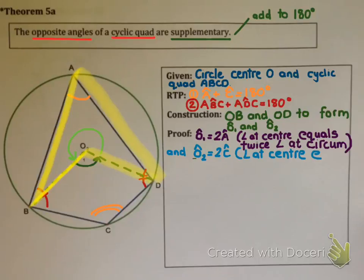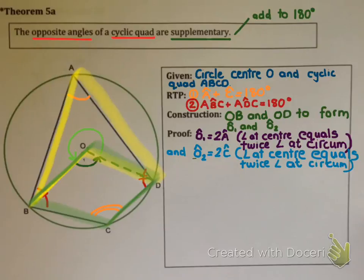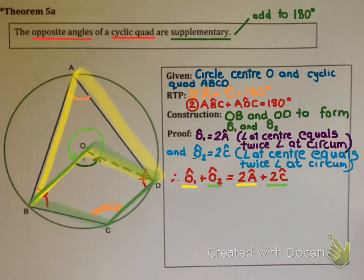Angle O2 is going to be twice angle C for the exact same reason: angle at center equals twice angle at circumference. This is because BD forms angle O2 at the center and forms angle C at the circumference. So angle O1 added together with angle O2 will be twice angle A plus twice angle C, which follows logically from the two steps before.